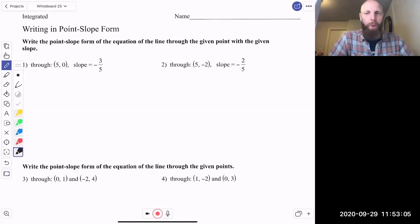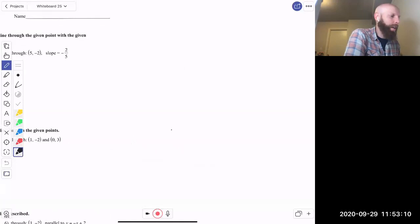Okay guys, so we're going to do writing in point-slope form. It's a little bit different than slope-intercept form, so let's just kind of contrast the two real quick.